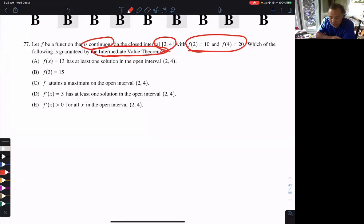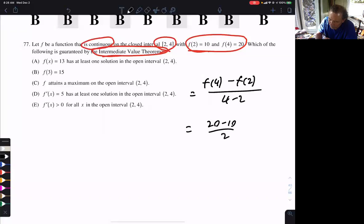So what some of you might do, I'll show you what some might do if they weren't prepared. It's like, oh, mean value theorem. F of B minus F of A over B minus A, that's going to be 20 minus 10 over 2. That's going to be 10 over 2. That's going to be 5. We are guaranteed that the derivative at some point C is going to be 5